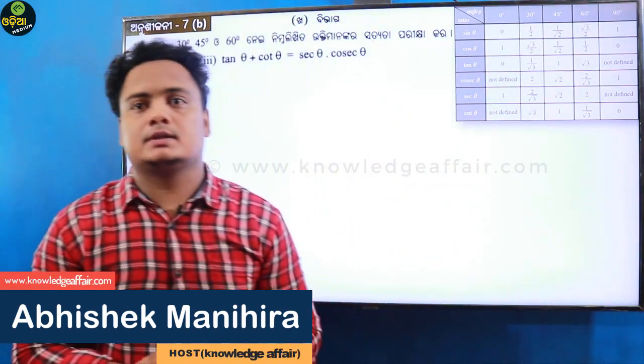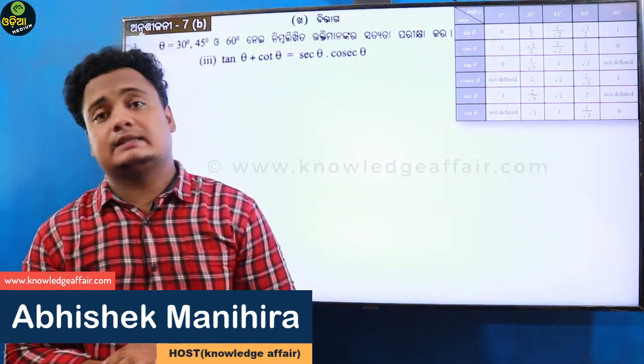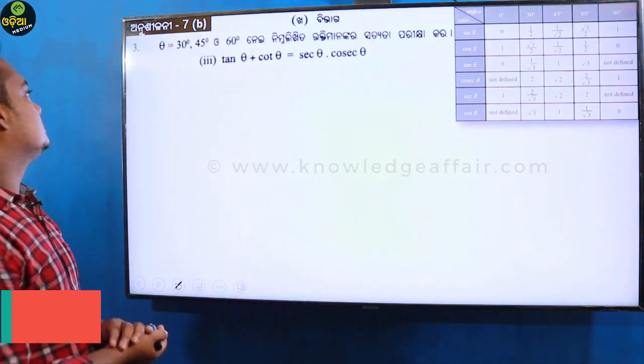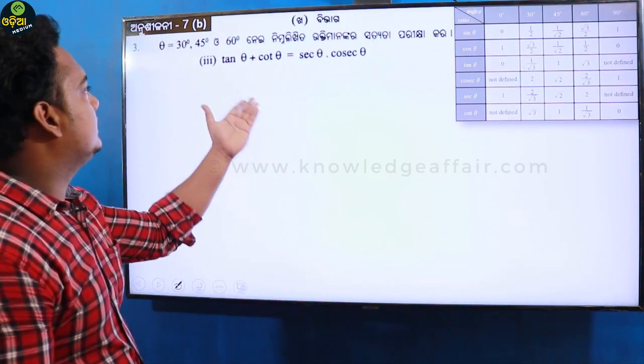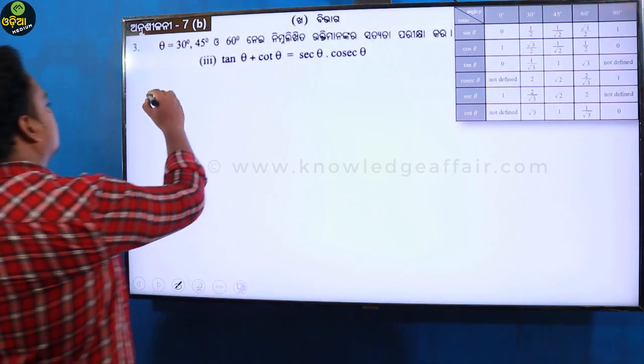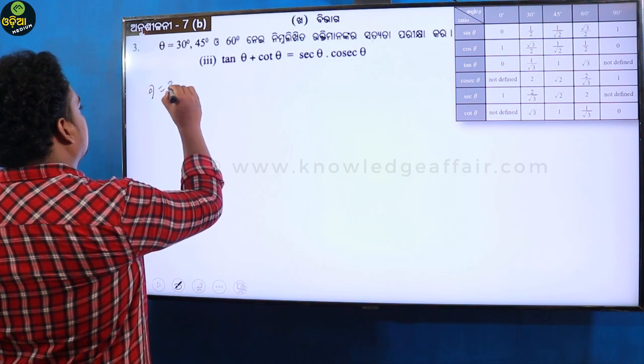Hi everyone, this is your host Abhishek from Knowledge Affair. Here we go to Exercise 7B, Question Number 3, Part 3. Given theta equals 30, 45, or 60 degrees. First, when theta equals 30 degrees.